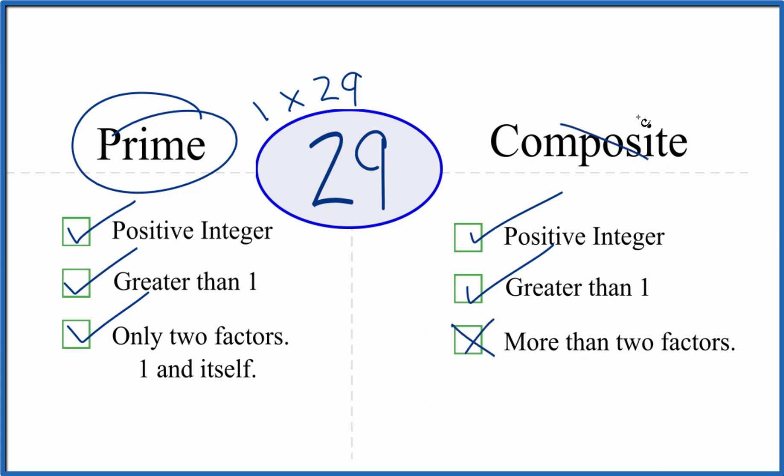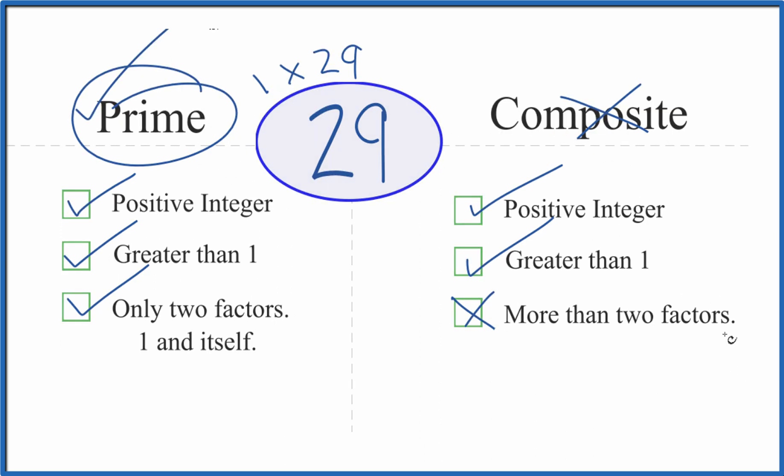So it can't be a composite number. This is Dr. B answering the question whether 29 is prime or composite. It's prime. Thanks for watching.